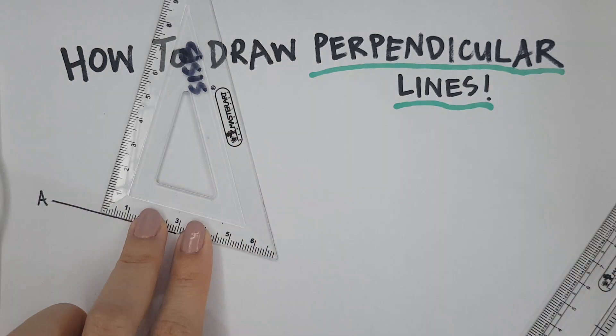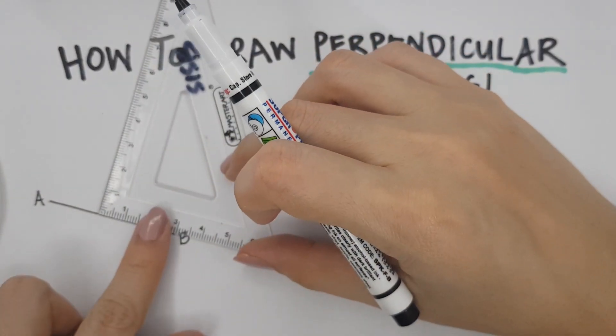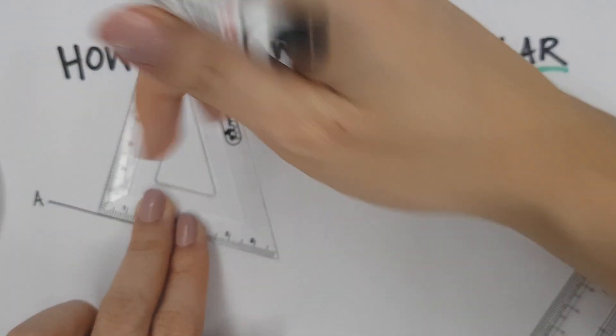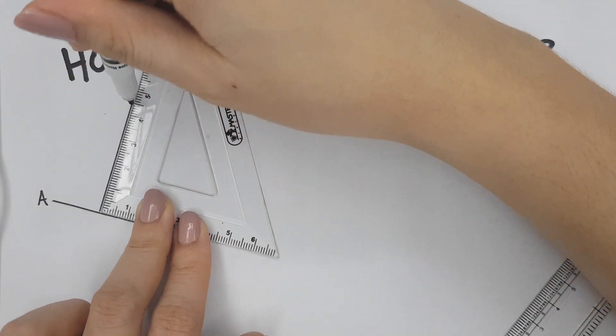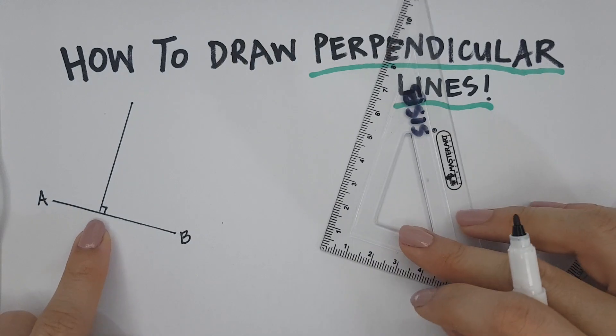But we need a 90 degrees there. Perpendicular lines are lines that meet at 90 degrees. So once I put my ruler straight on AB, I can draw a perpendicular line because it hits at 90 degrees.